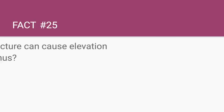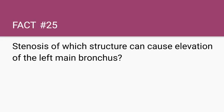Stenosis of which structure can cause elevation of the left main bronchus? It's a structure of the heart. The answer is the mitral valve. Mitral stenosis can cause right atrium enlargement, thus leading to elevation of the left main bronchus.